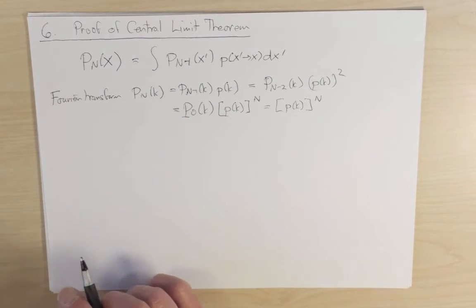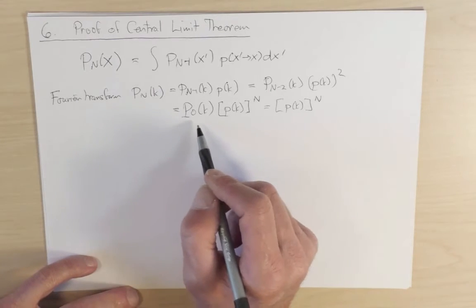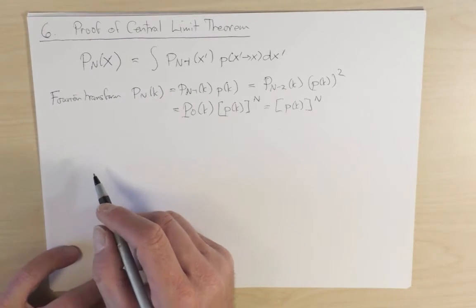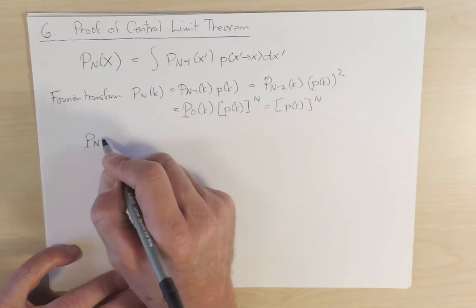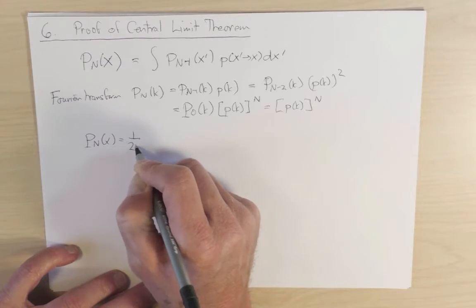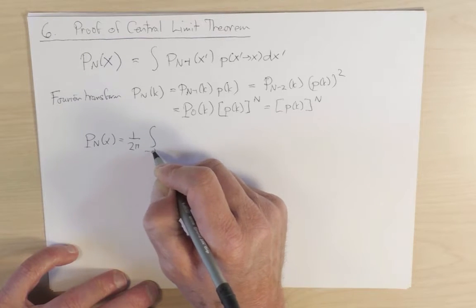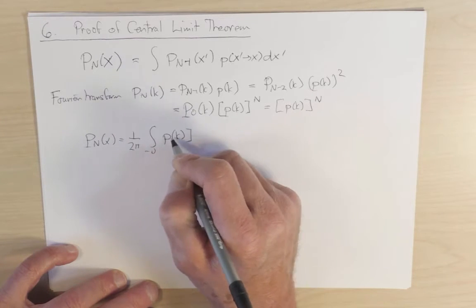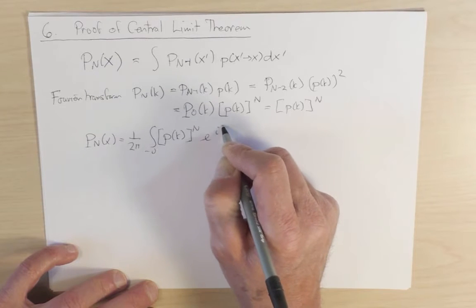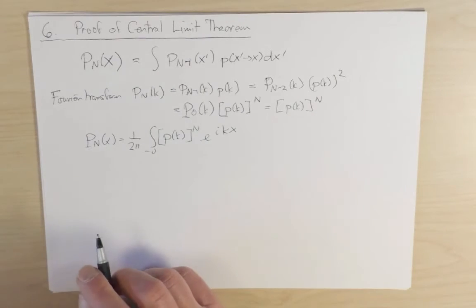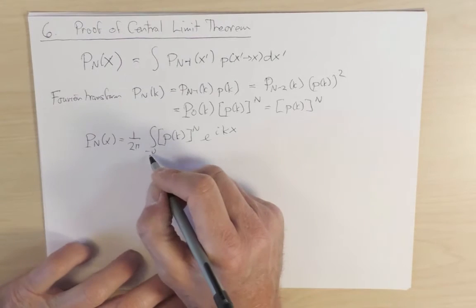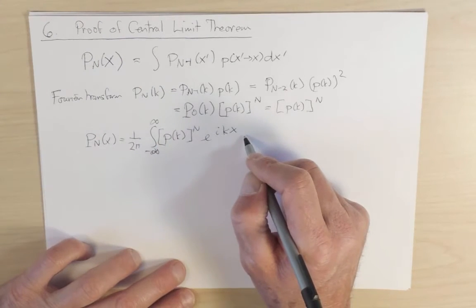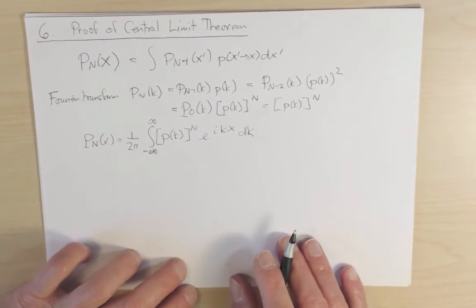Now to find the probability distribution as a function of x, we just have to inverse Fourier transform P_n of k. So P_n of x is equal to 1 over 2 pi, the integral over all space, and it's going to be p of k to the power n e to the i k x. Let me do this in one dimension because in higher dimensions there's no conceptual difference, it's just more clunky. So this is an integral from minus infinity to plus infinity dk, one dimensional integration.